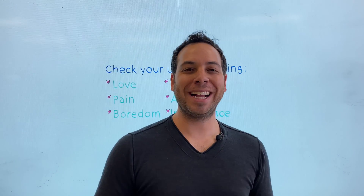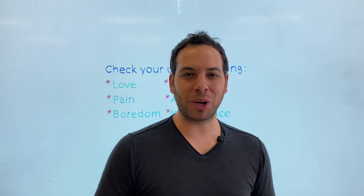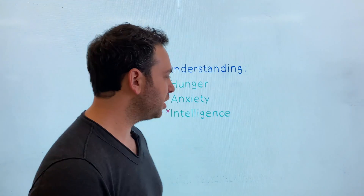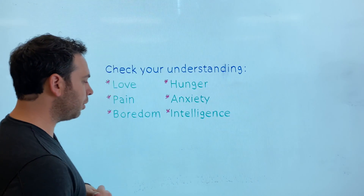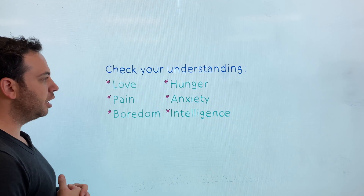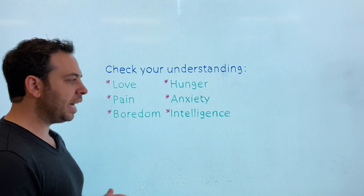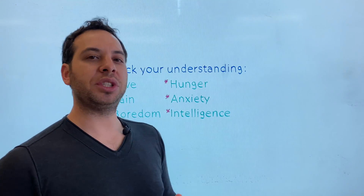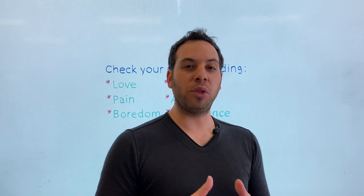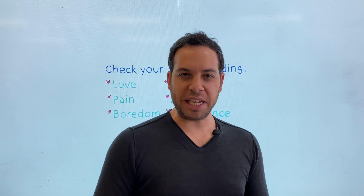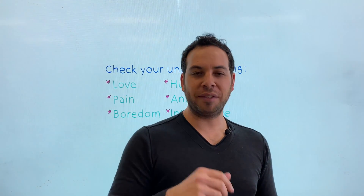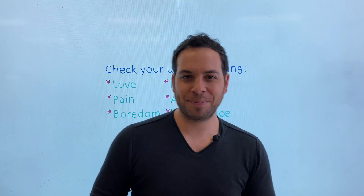Thanks for watching. Before we finish, try a couple of operational definitions on your own. We have six concepts: love, pain, boredom, hunger, anxiety, and intelligence. The question is: how do we observe and measure these variables? Practice on your own. Don't forget to like the video and subscribe. See you next time.